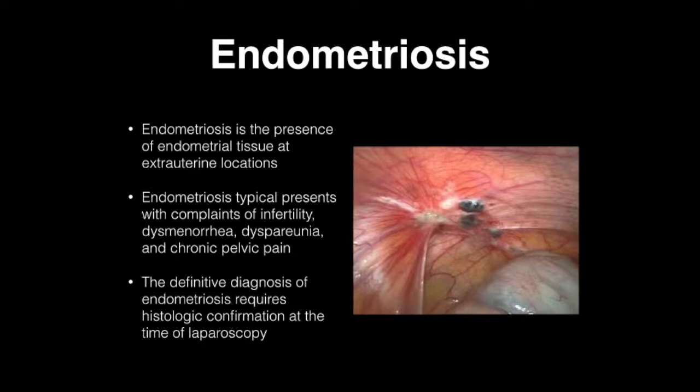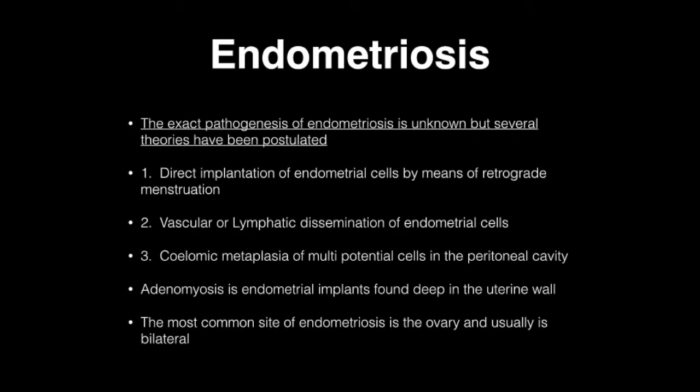The definitive diagnosis of endometriosis requires histologic confirmation at the time of laparoscopy. The exact pathogenesis is unknown, but several theories have been postulated. These include direct implantation of endometrial cells by means of retrograde menstruation, vascular or lymphatic dissemination of endometrial cells, coelomic metaplasia of multi-potential cells in the peritoneal cavity, or endometrial implants found deep in the uterine wall.